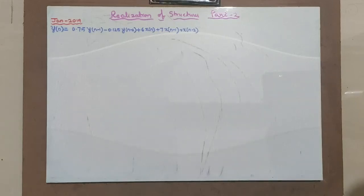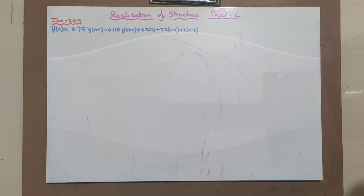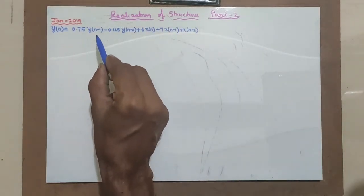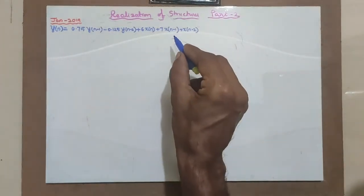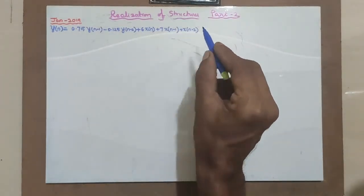Hello students, let us continue with part 2 of realization of structures. In this another typical example I am solving. This example is asked in January 2019 question paper where Y of N is given. Y of N is equal to 0.75 Y of N minus 1 minus 0.125 Y of N minus 2 plus 6 X of N plus 7 X of N minus 1 plus X of N minus 2.